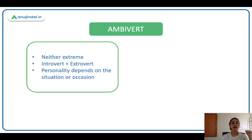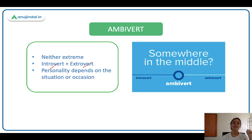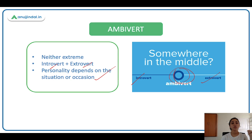Next is ambivert. An ambivert has a balanced personality — a balance of introvert and extrovert. Neither extreme: they are not completely introverted nor completely extroverted; they are in the middle. Their personality depends on the situation or occasion — how they will act depends on what situation they are in.